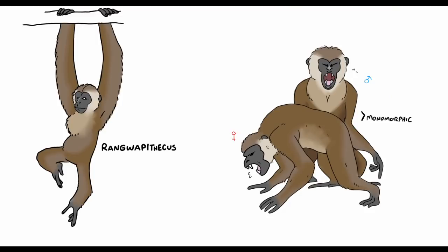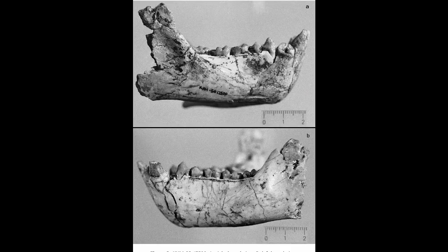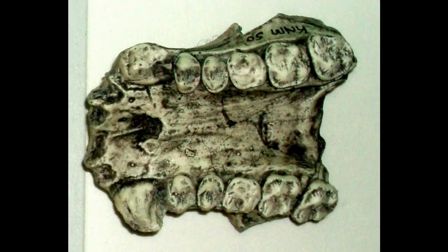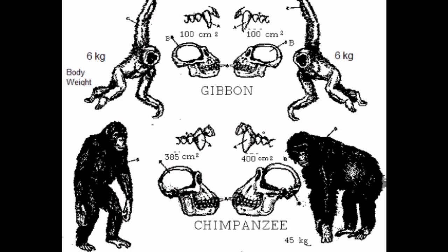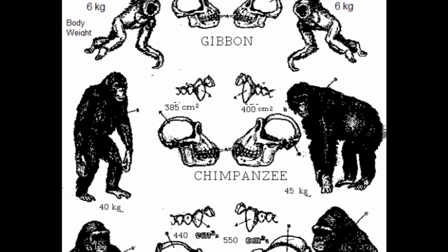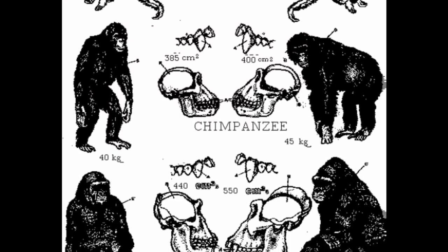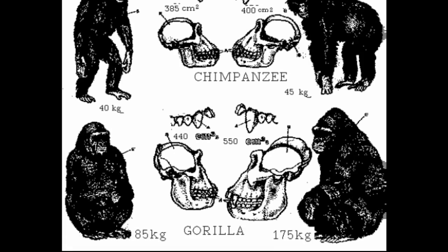Ronglipithecus is noted as being monomorphic in its canine teeth, meaning males and females had canines of the same height, much like gibbons or humans do, and these canine teeth were blade-like and well adapted for shearing. This suggests that Ronglipithecus was invested in folivory as well as frugivory, and that its social system may have been oriented around single pair family groups. However, caution must be exercised, as sexual dimorphism — or lack thereof — can only be appropriately assessed with sufficient sample sizes of teeth or post-crania.